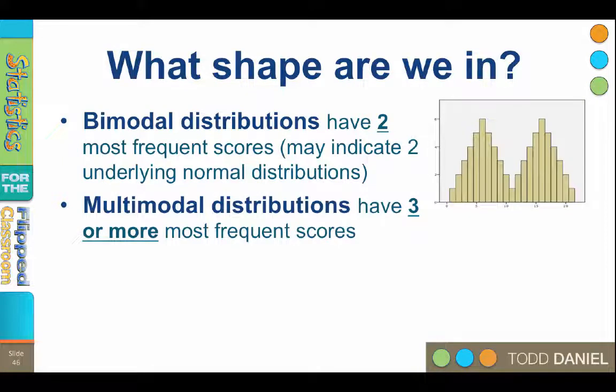A multimodal distribution has three or more most frequently occurring scores. You may wonder why we don't call it a trimodal distribution or a quadrimodal distribution. The answer is that when we start getting three, four, five modes, there is something very wrong in our data set. Three or more modes is multimodal and it's messed up. We need to figure out what is going on before we try to analyze those data.